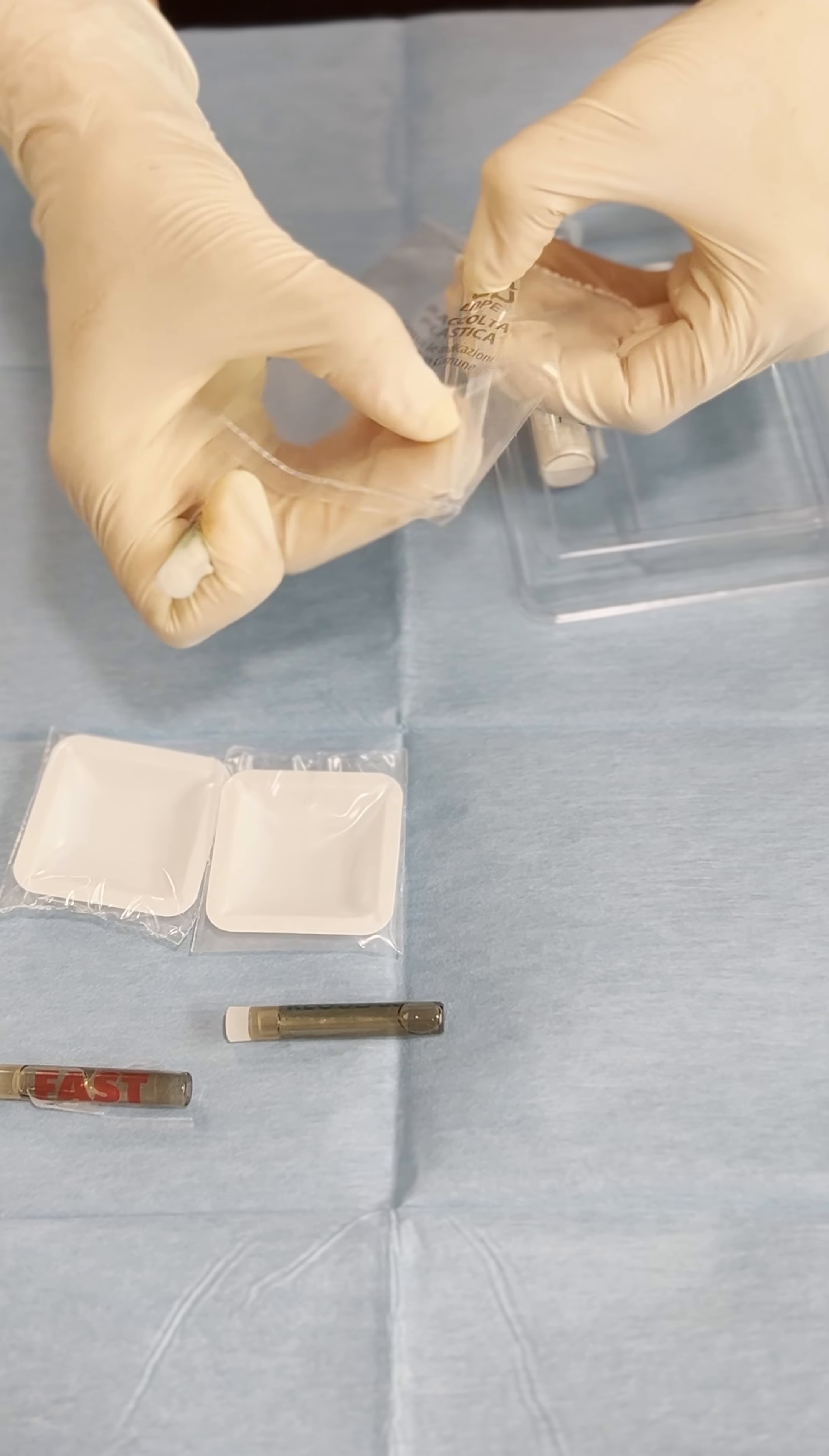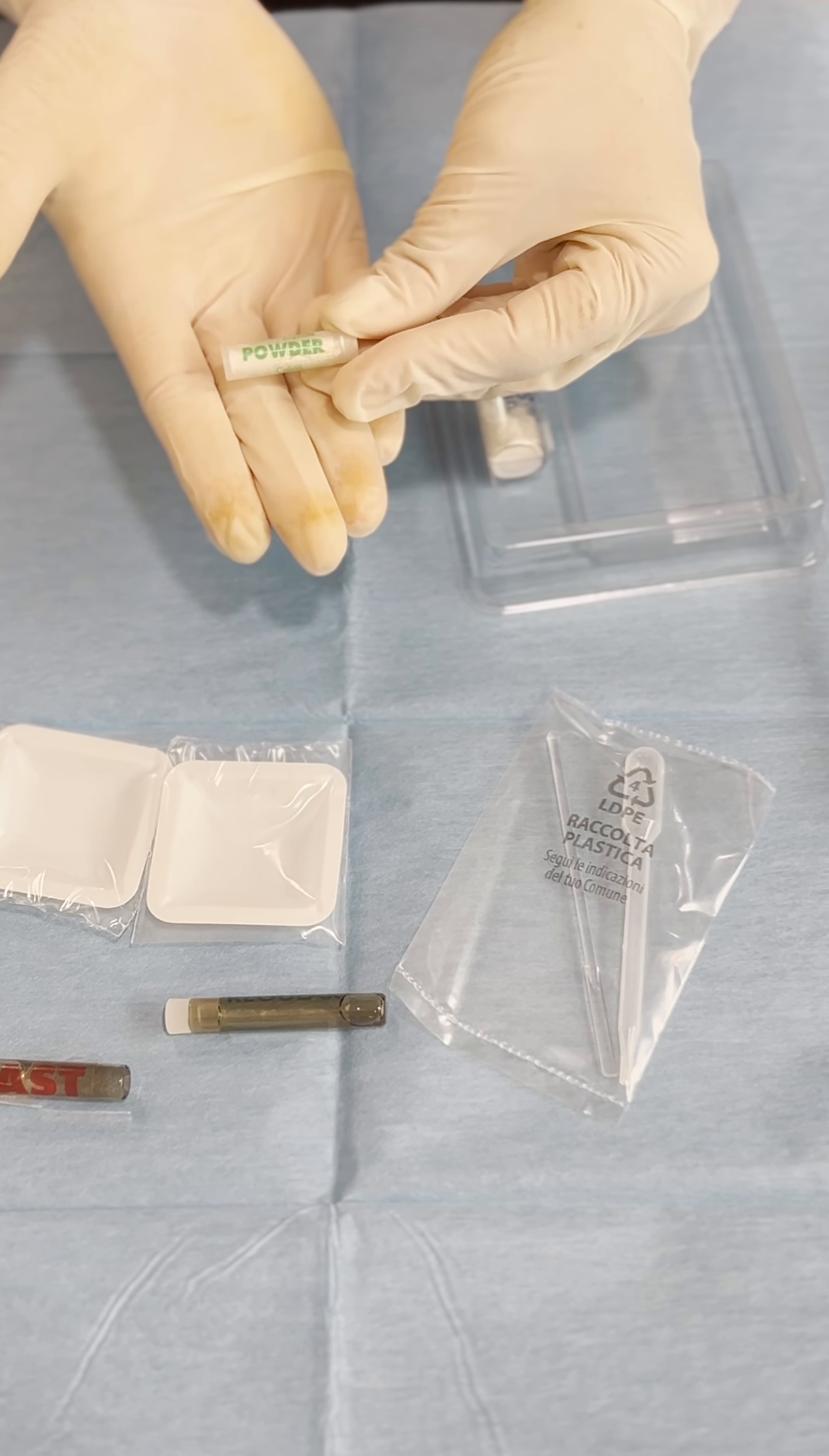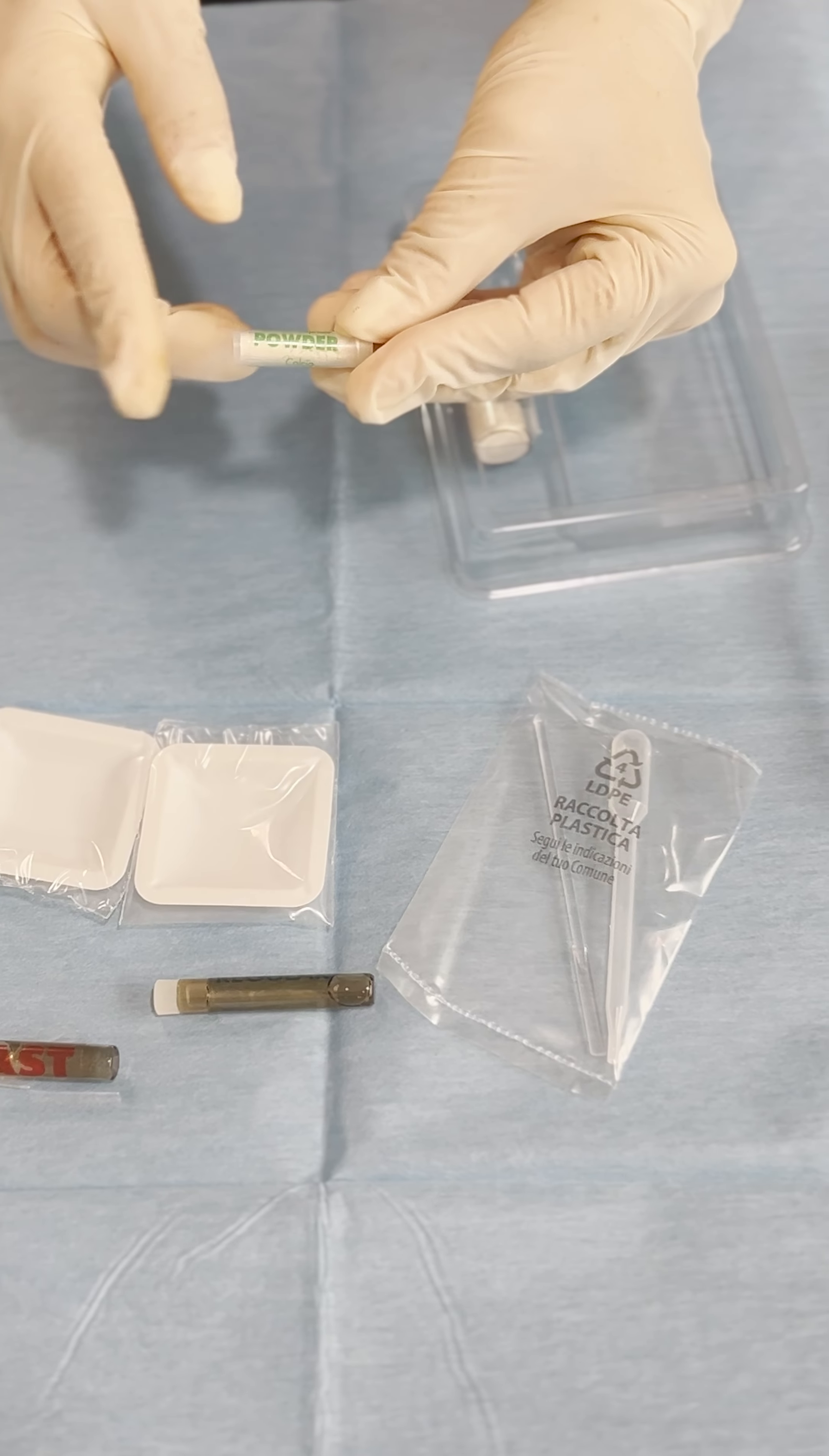Then here we have the mixing pipes and here we have hemihydrate calcium sulfate powder that we can use as a membrane on top of the defect and we can also use it during our apicoectomy in the bone crypts in order to have the bleeding under control and do our apicoectomy right.